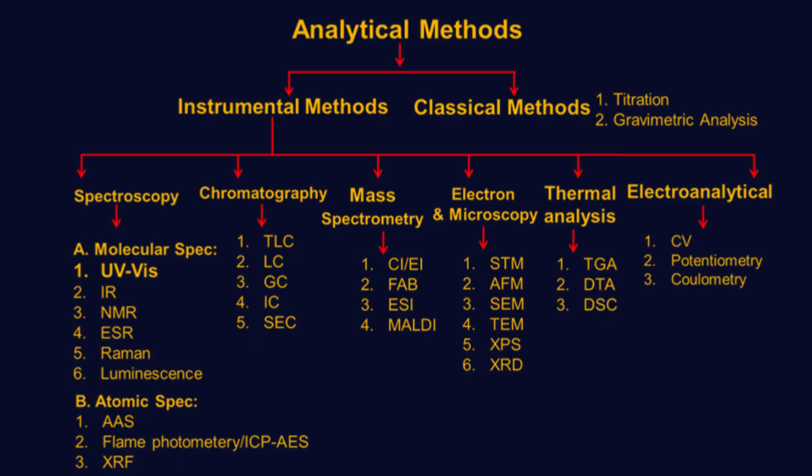Molecular spectroscopy involves methods like UV-visible, infrared, IR, nuclear magnetic resonance NMR, electron spin resonance, Raman, and luminescence spectroscopy. Atomic spectroscopy includes atomic absorption spectroscopy AAS, flame photometry or inductively coupled plasma atomic emission spectroscopy ICP-AES, and X-ray fluorescence XRF.